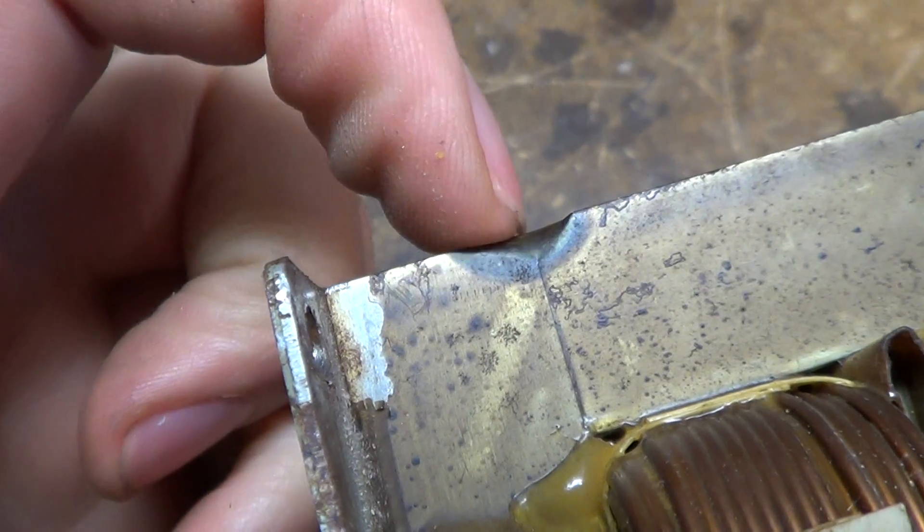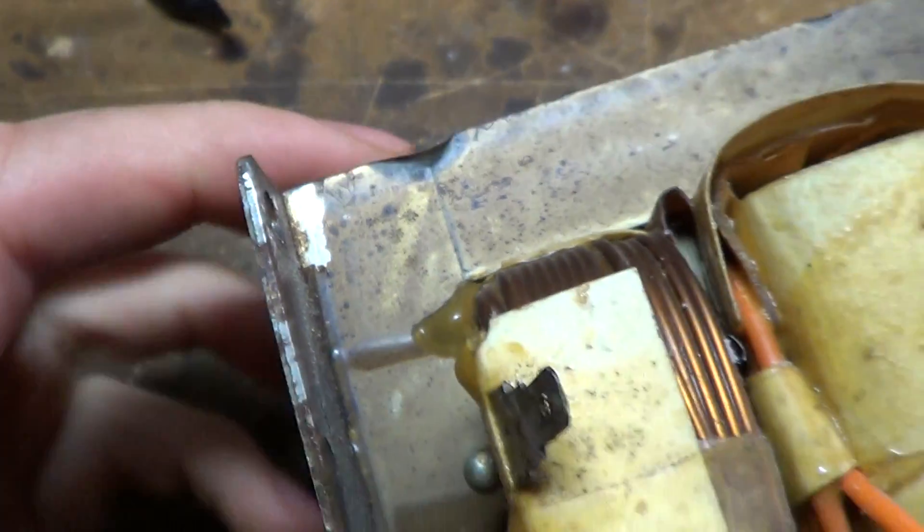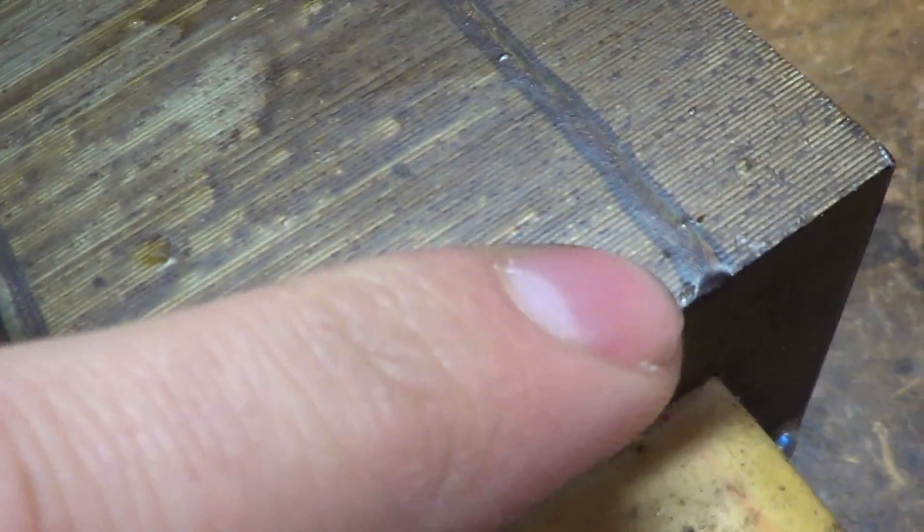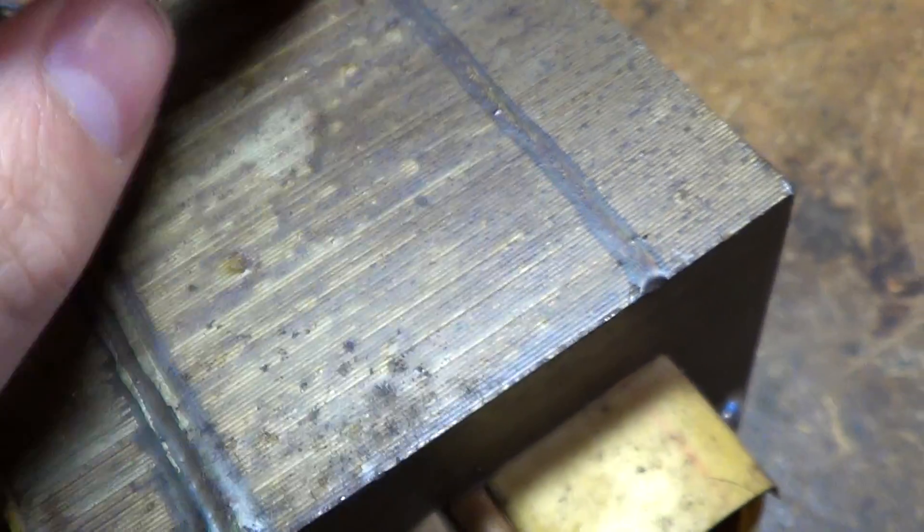So what I did was just take a hacksaw blade and cut through that until that was separated. You can see in this one there's actually a couple more weld lines to hold the laminations together. So I did that.